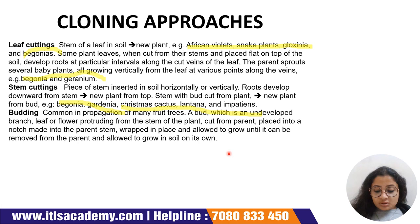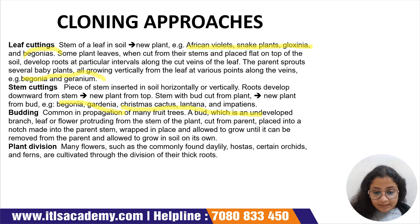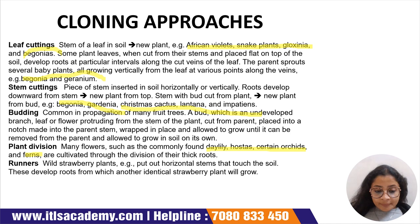Coming to plant division: many flowers such as the commonly found daisy, hostas, certain orchids, and ferns are cultivated through division of their thick roots. Then we have runners: wild strawberry plants put out horizontal stems which touch the soil and develop into roots, from which another identical strawberry plant grows. From the stem, a root is developing, and from the root, another strawberry plant is developing.